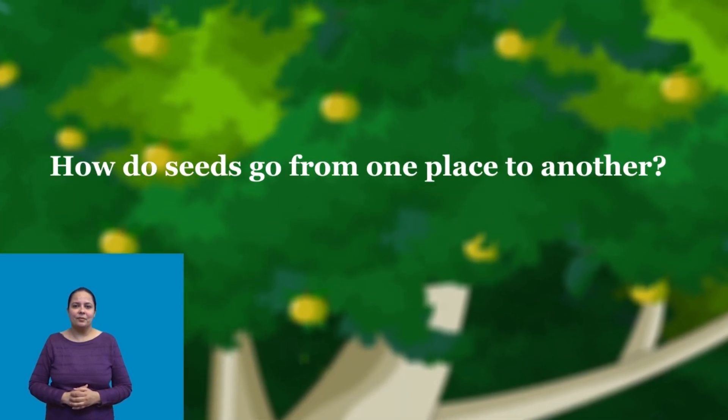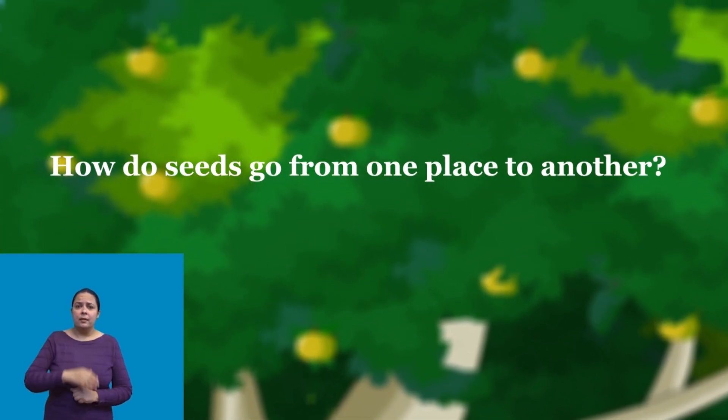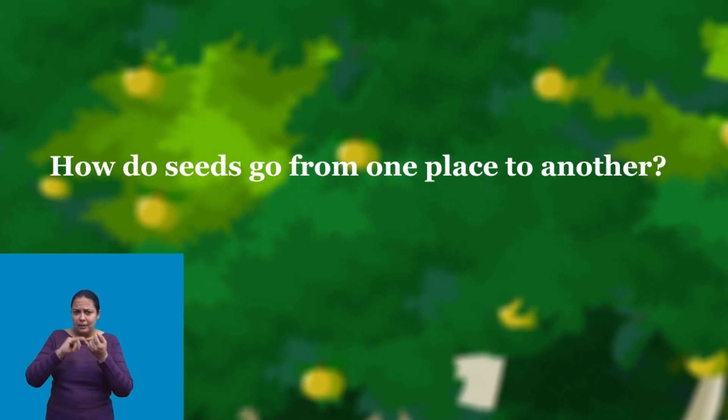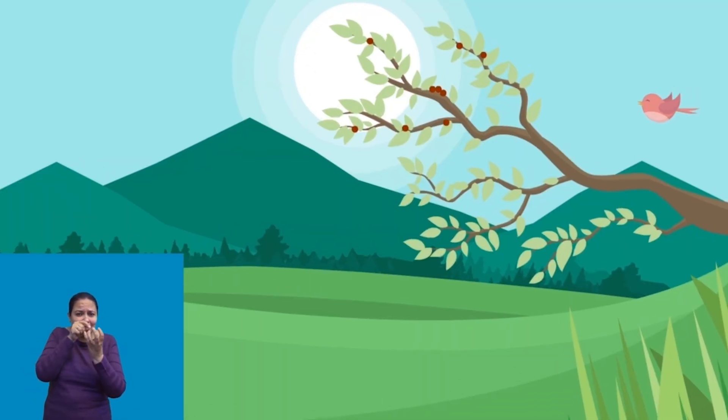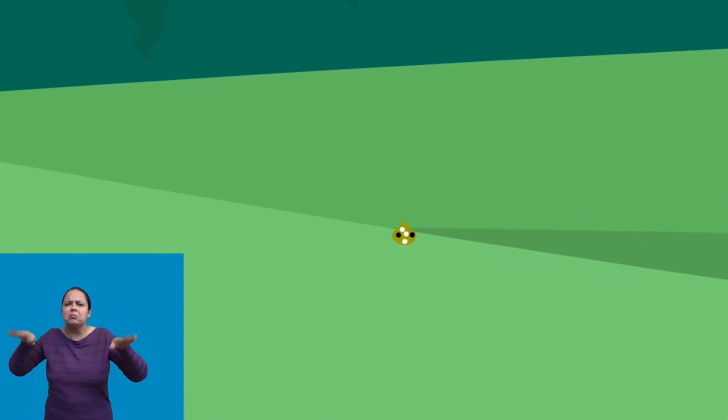Do you know how seeds reach from one place to another? Can you guess? Look at these birds. When the birds eat fruits, some of the seeds fall here and there.